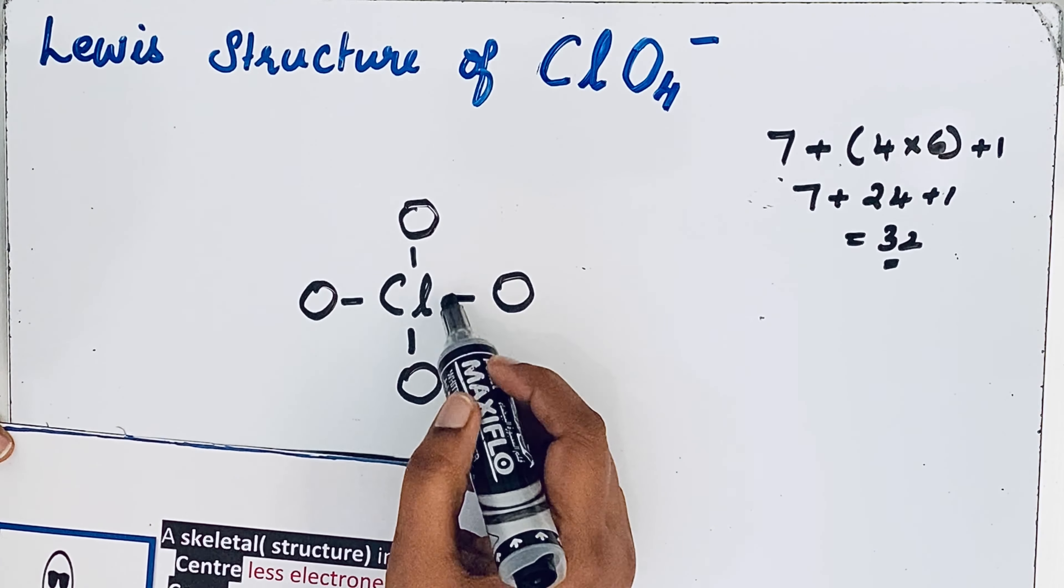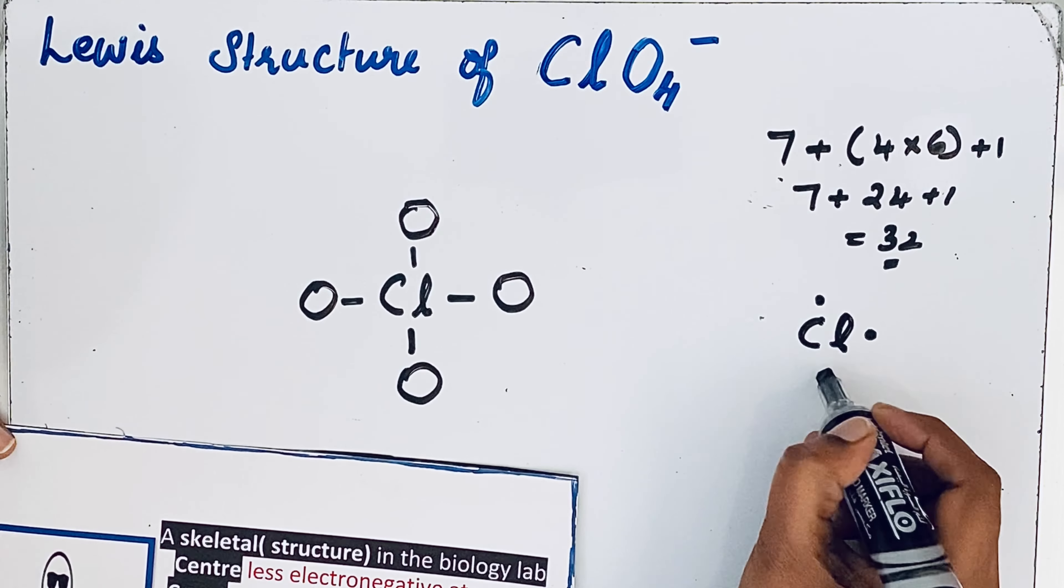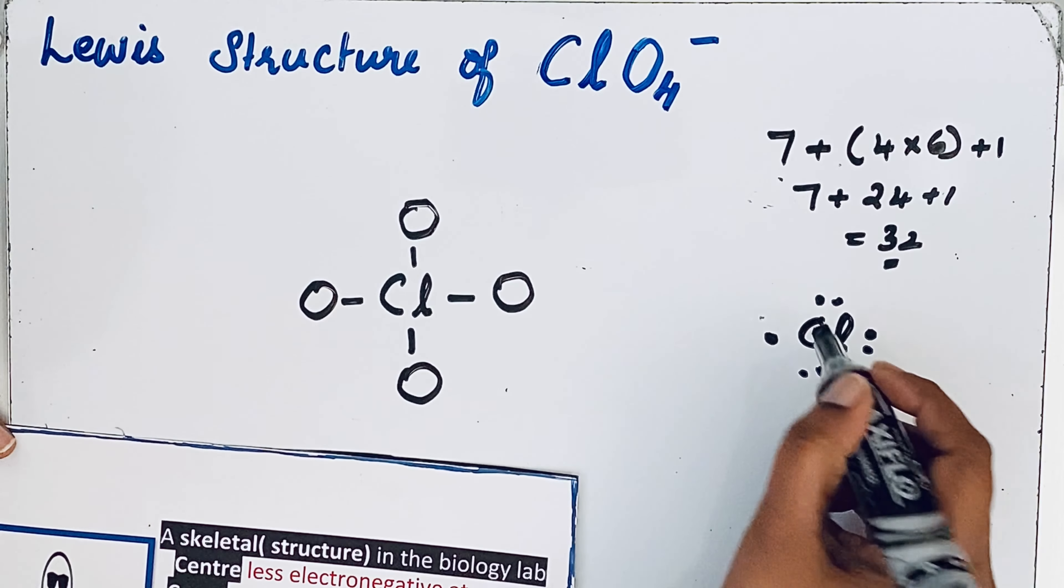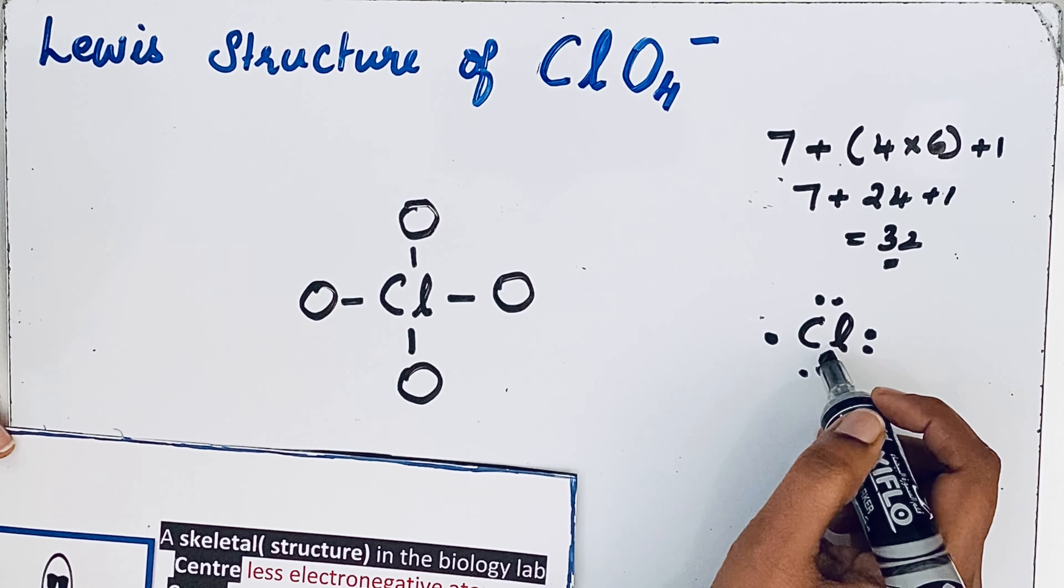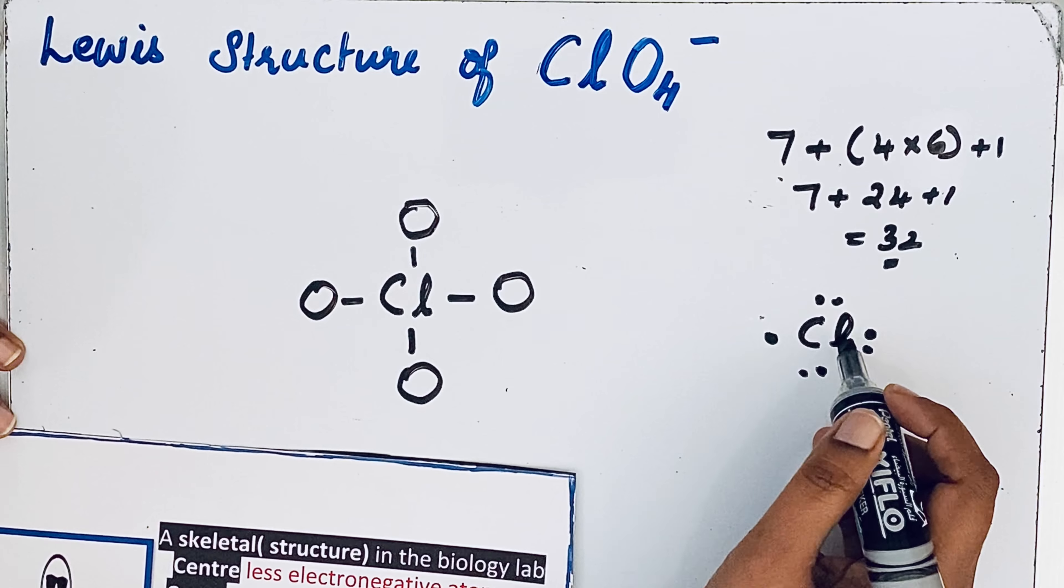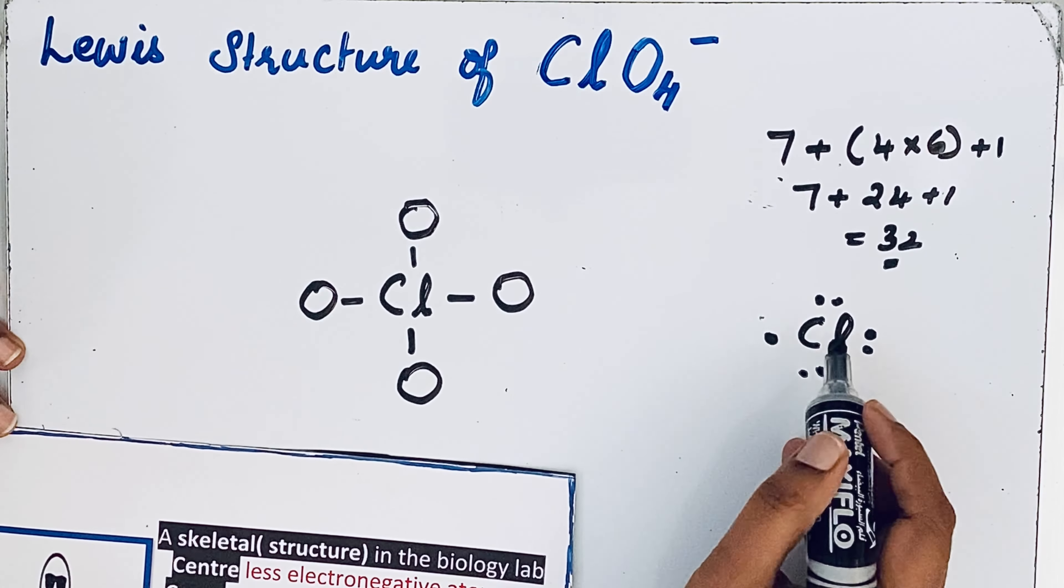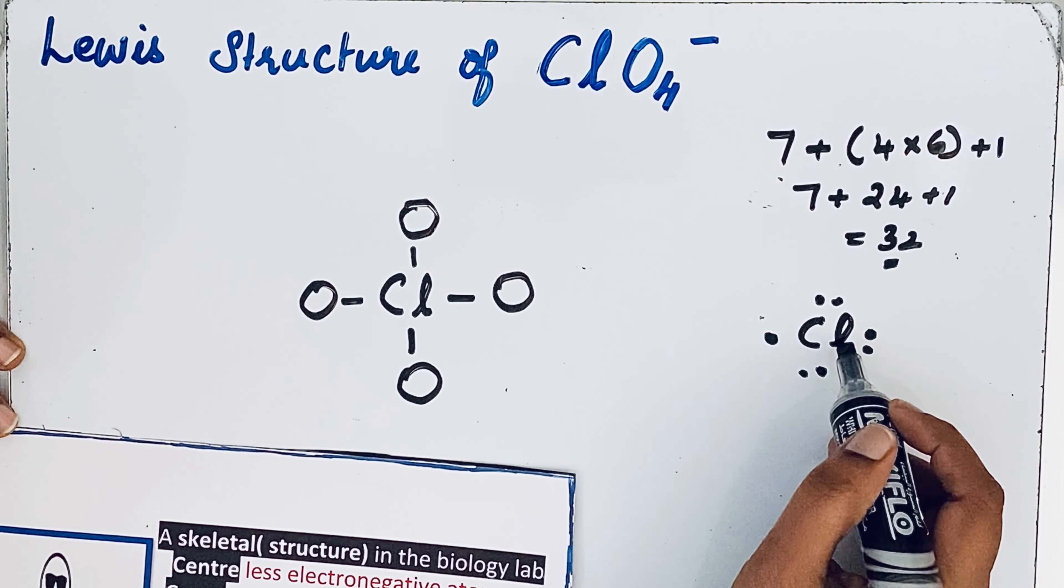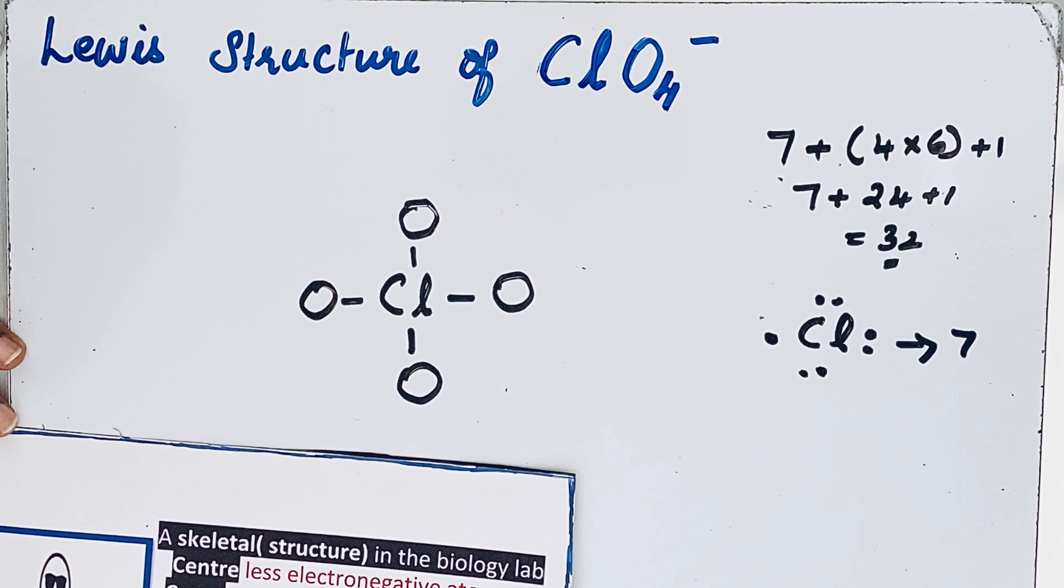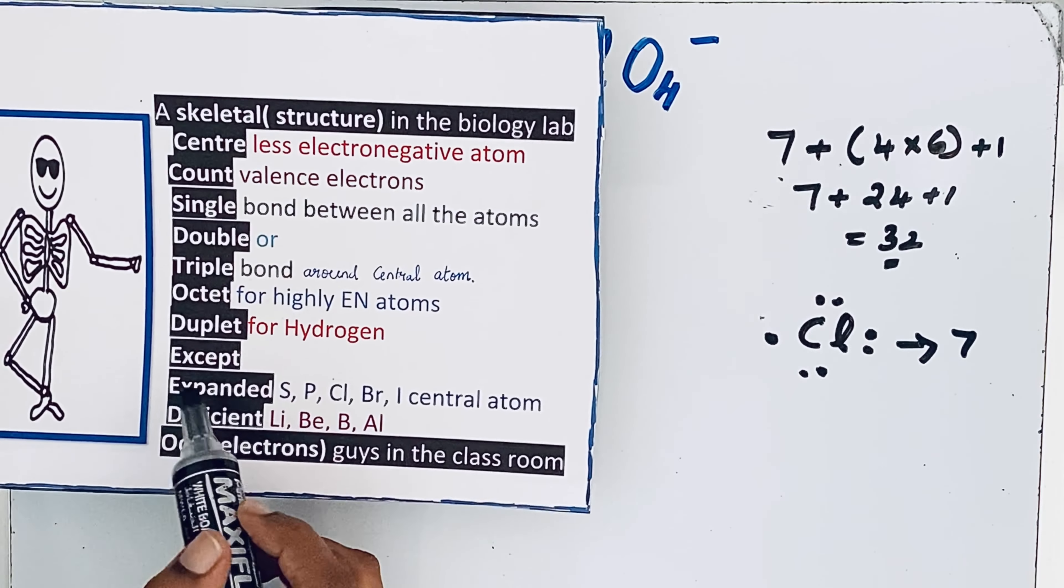Octet means it gives stability for an atom. For chlorine, valence electrons are seven: one, two, three, four, five, six, seven. This is the electron dot structure for chlorine. Chlorine is in the third period. After third period there is the availability of d-orbitals. So it means chlorine can form seven bonds. You can see some expanded cases are there.